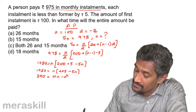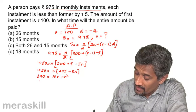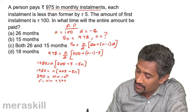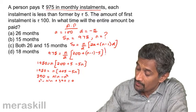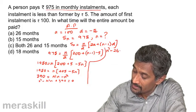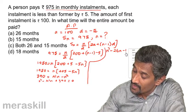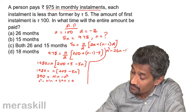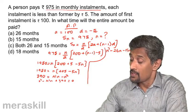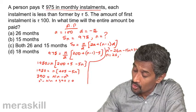Rearranging: n² − 41n + 390 = 0. Factorising: (n − 26)(n − 15) = 0, giving n = 26 or n = 15.